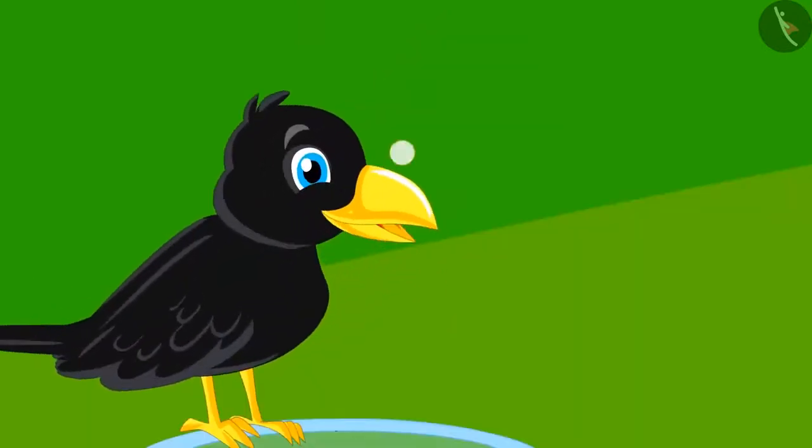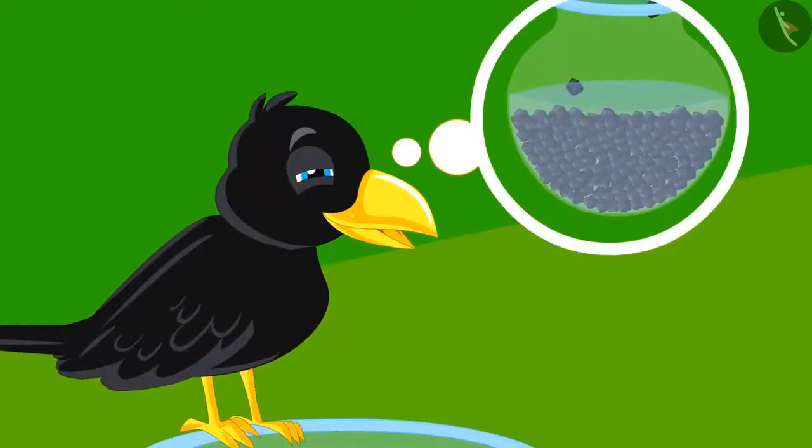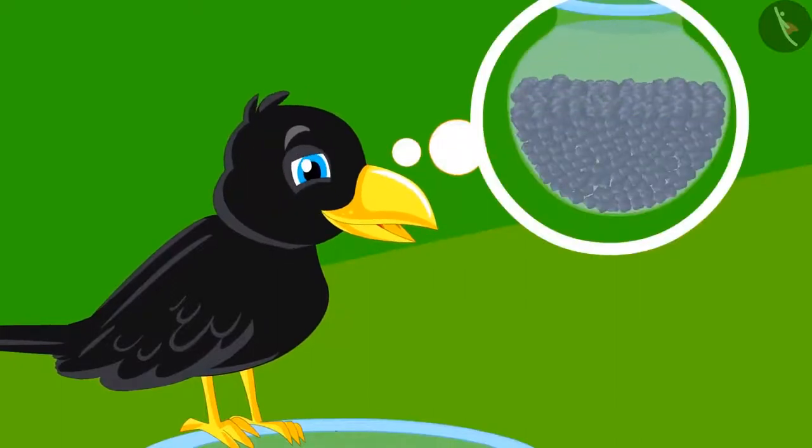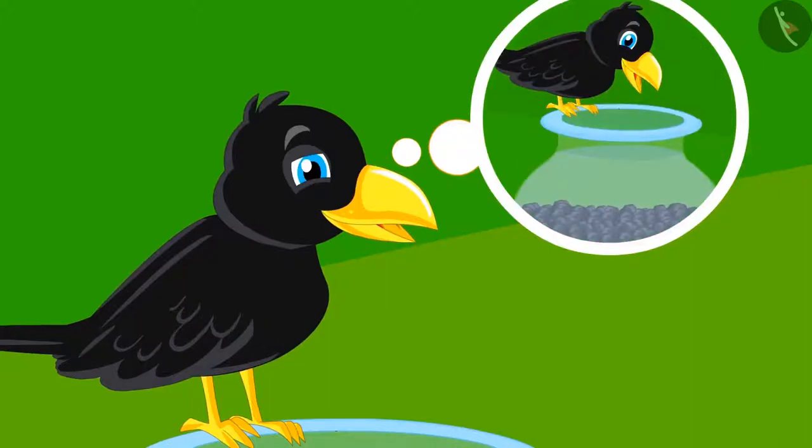The crow got an idea. He thought that if he put stones in the pitcher, the water in the pitcher will rise up and then he will be able to drink the water easily.